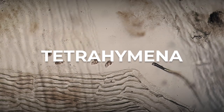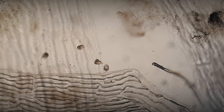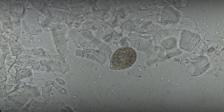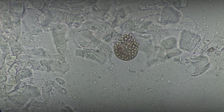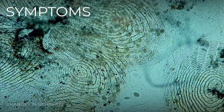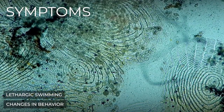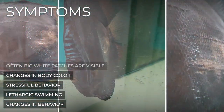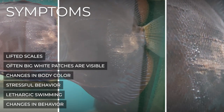The genus Tetrachymena belongs to the family Tetrachymenidae, which includes about 70 species. Tetrachymena looks like a drop of water with a pointy nose, and many internal organelles can be seen. Tetrachymena causes changes in fish behavior — for example, lethargic swimming and stress — as well as changes in body color. A lot of times you see big white patches and lifted scales on infected fish.